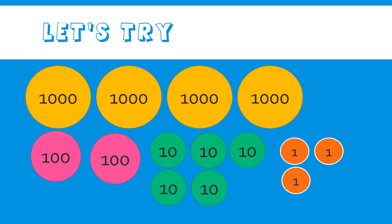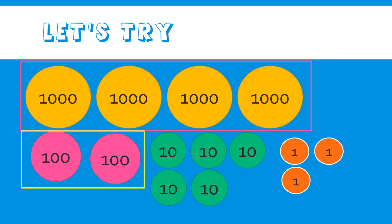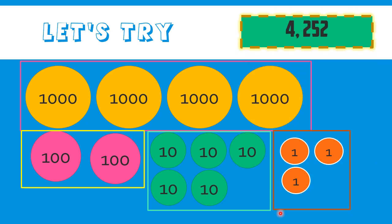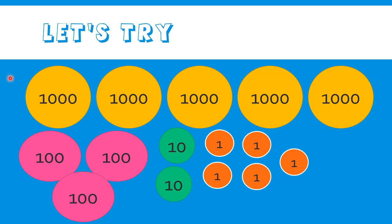Let us try this example. How many thousands do we have? We have four thousands. How many hundreds do we have? We have two hundreds. How many tens do we have? We have five tens. How many ones do we have? We have three ones. So how many in all do we have? Very good. We have four thousand two hundred fifty-three.